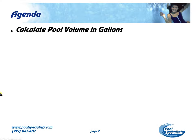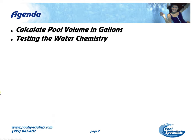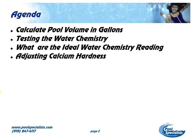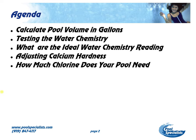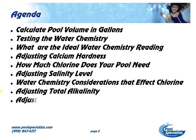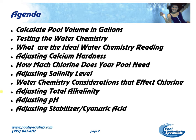Our agenda for today: first, in order to make any adjustments, we're going to need to know how many gallons the pool is. So we're going to cover calculating the pool volume in gallons, then we need to test the water chemistry to see where we are, and then we're going to tell you what the ideal water chemistry readings are. We're going to adjust for calcium hardness, look at how much chlorine the pool requires, adjust the salinity level, and take into consideration other things that affect chlorine consumption. We're going to adjust total alkalinity, adjust the pH, and then adjust the stabilizer, slash cyanuric acid, slash CYA.